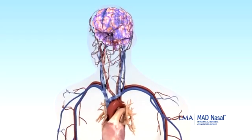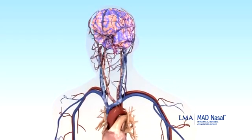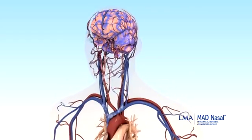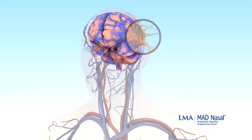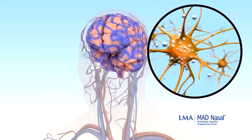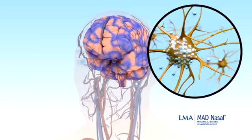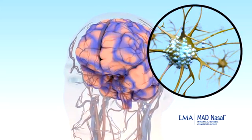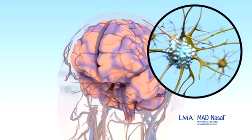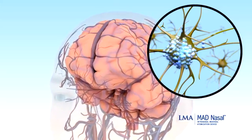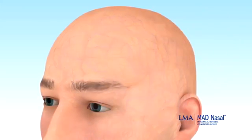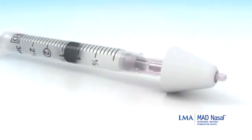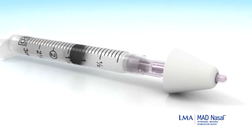Once in the bloodstream, the medication circulates throughout the body. In the central nervous system, it enters the brain and binds to neuroreceptors, exerting the desired clinical effect and leading to resolution and improvement in the patient's symptoms.